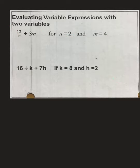Okay, so, hopefully, you're done number 2. When you did this, k equaled 8 and h equals 2. So, when you plug it in, step 1, substitute. 16 divided by, instead of k, we put 8, plus 7. Instead of h, we do times 2.